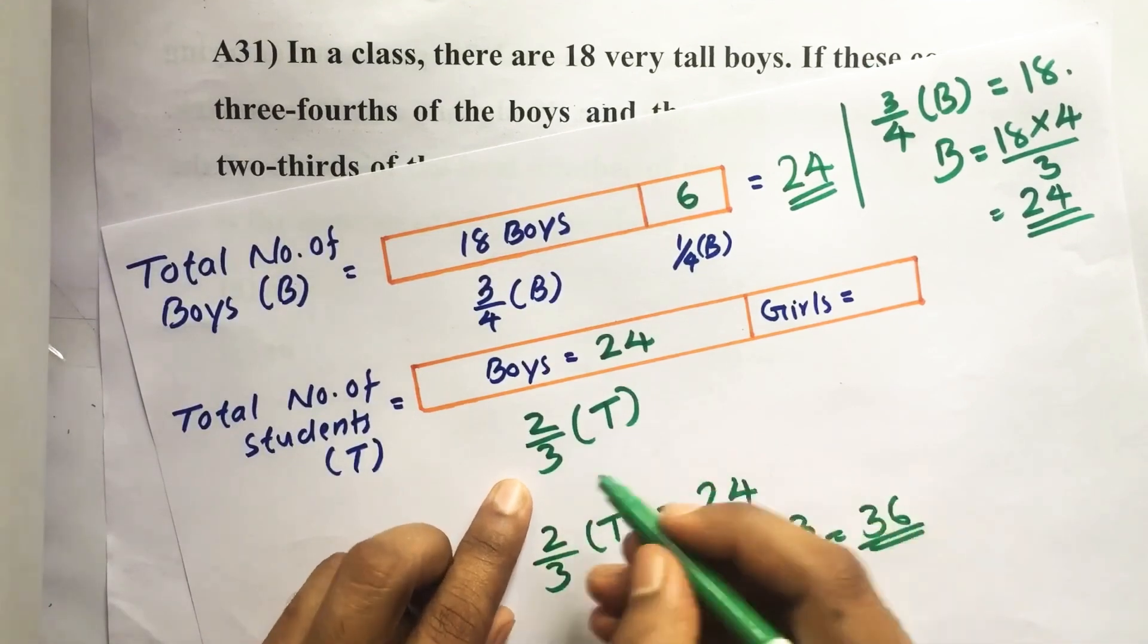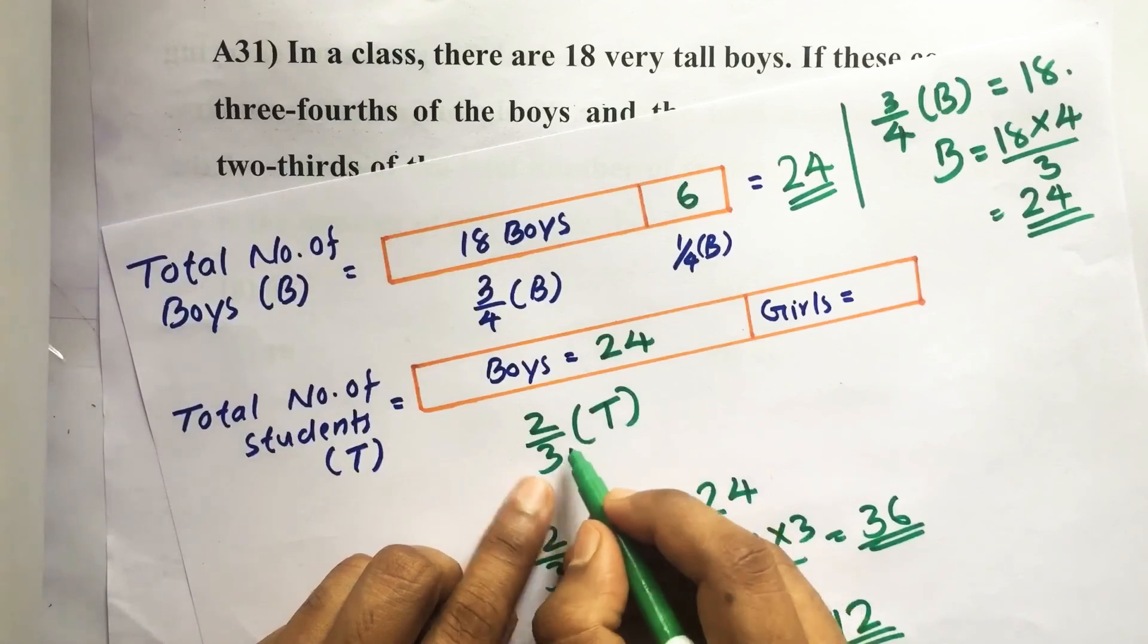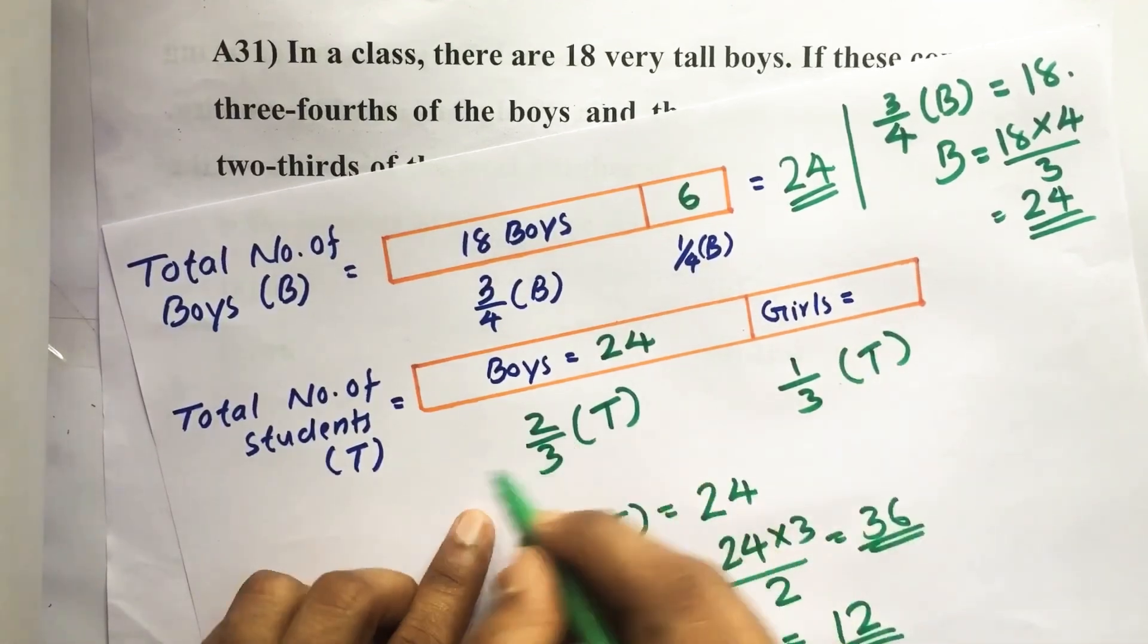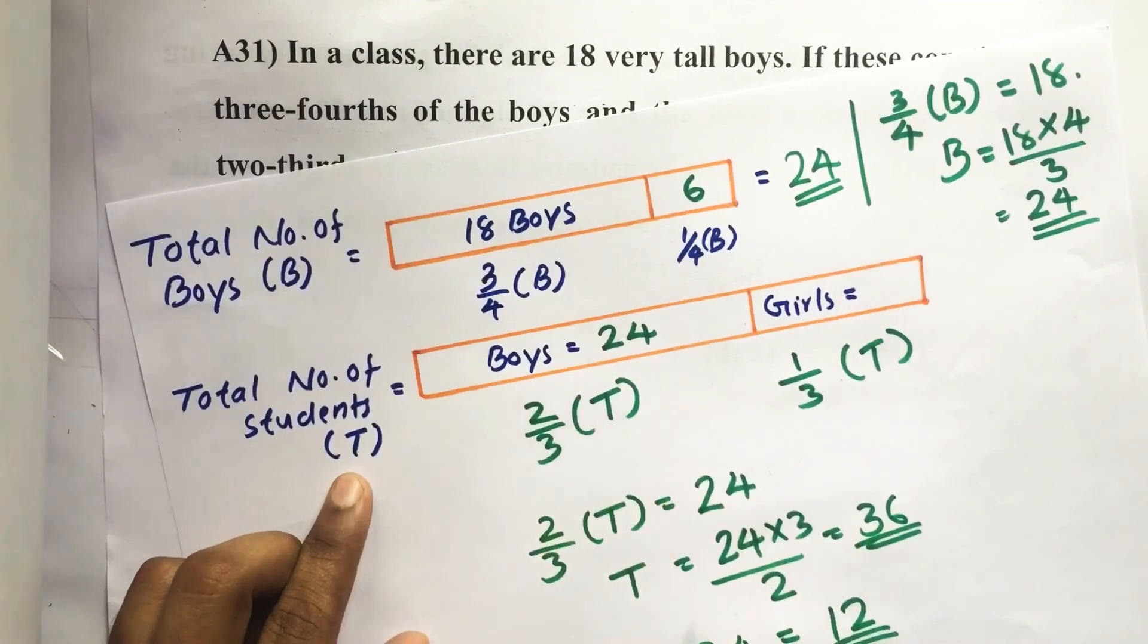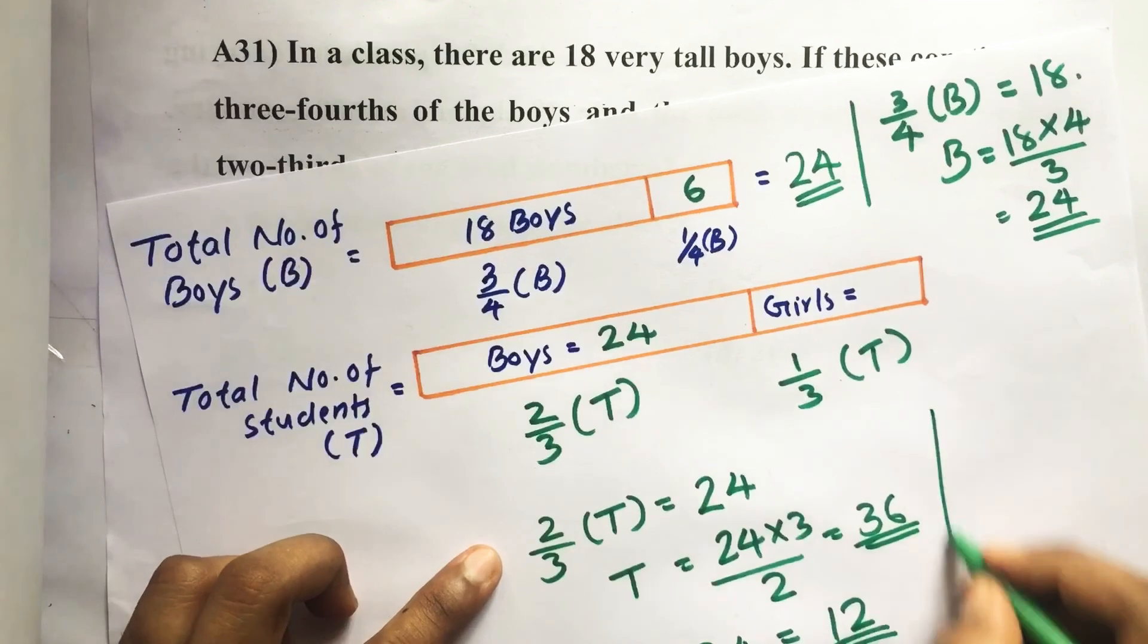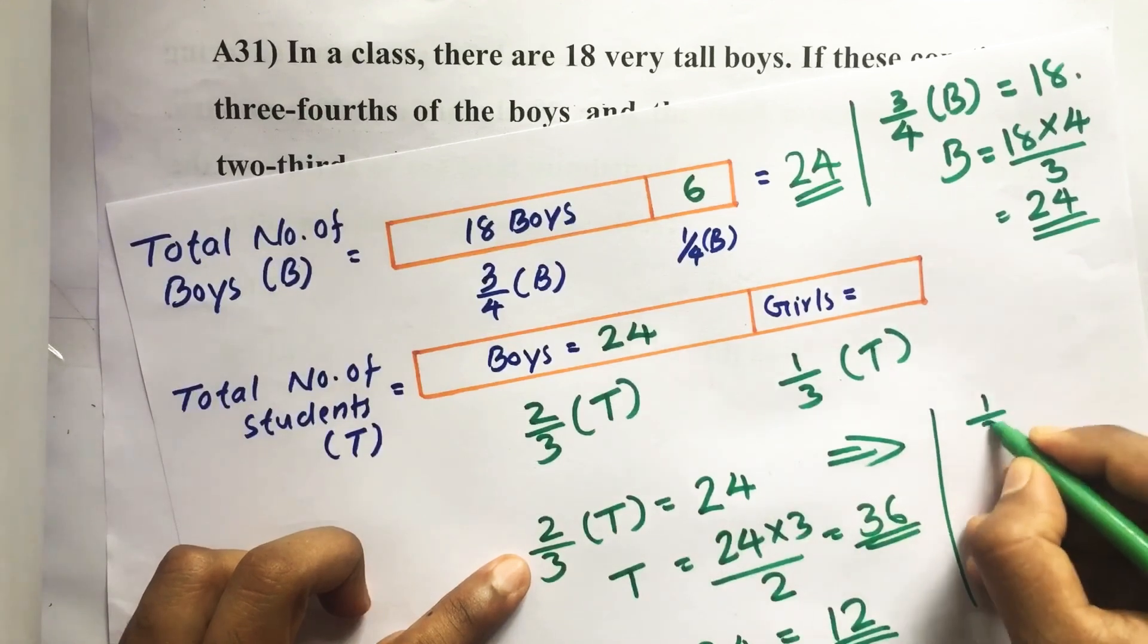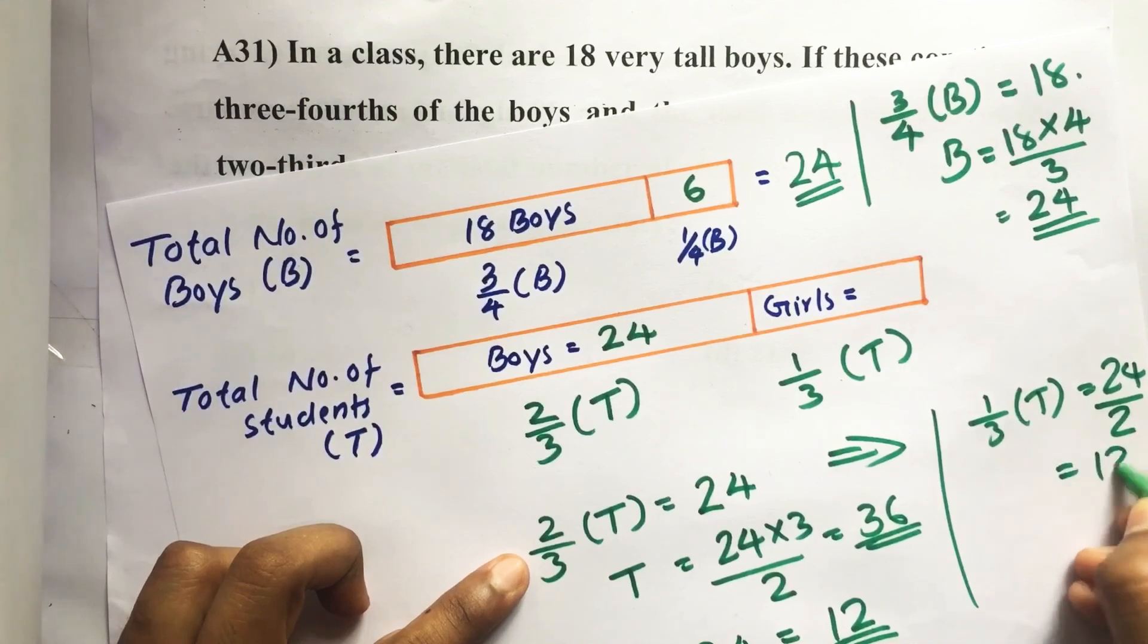Otherwise we also can do like two-thirds of T equal to 24. Then the remaining students in the class equal to one-third of T, which we get by deducting two-thirds of T from T. So T minus two-thirds of T, we get one-third of T. So from this equation two-thirds of T equal to 24, then one-third of T equal to 24 divided by 2. We get 12.